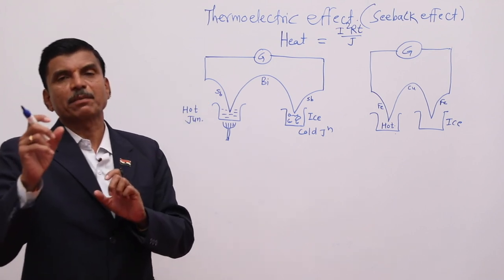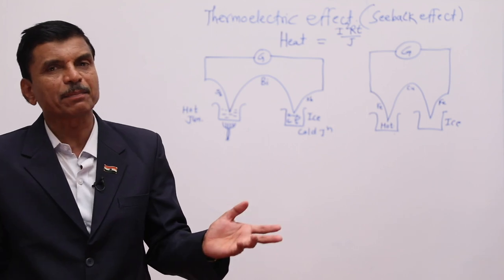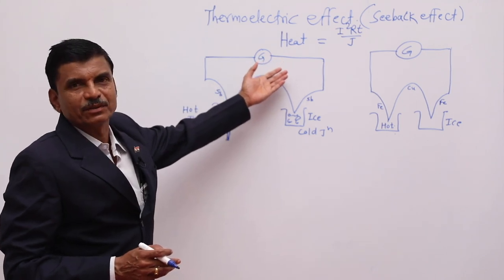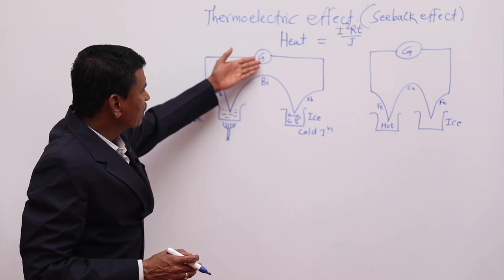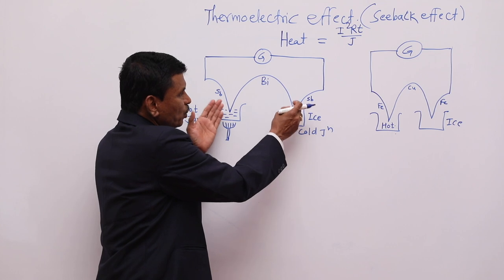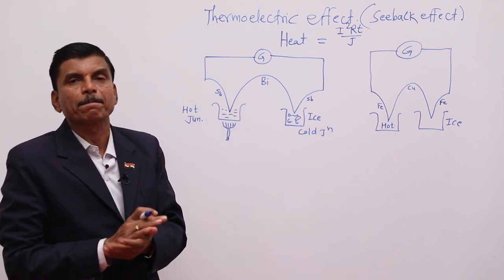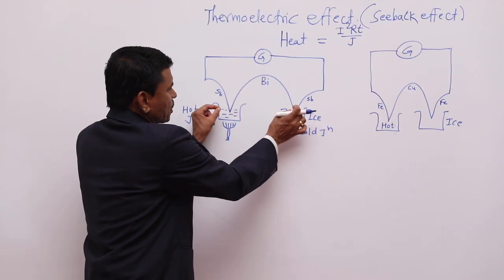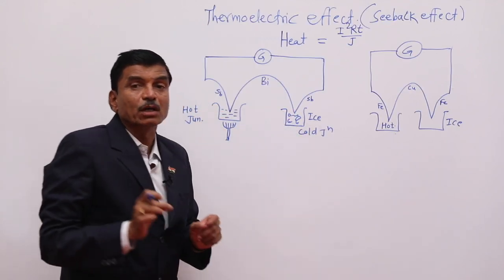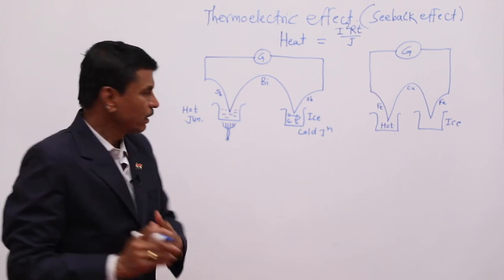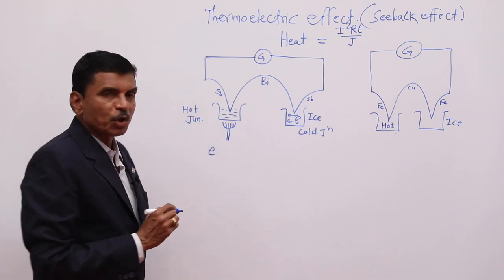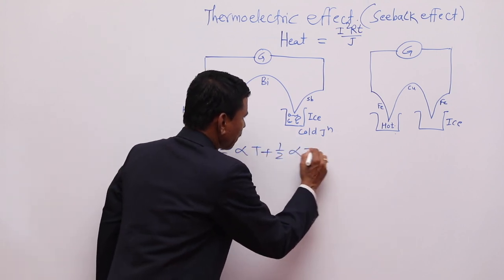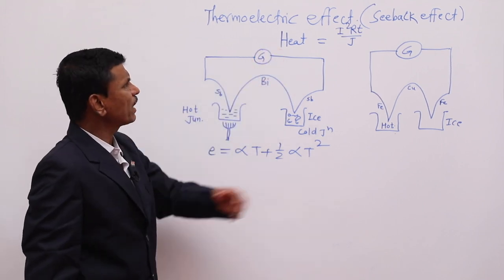Seebeck found that when two dissimilar metals have their two junctions kept at different temperatures, an EMF is induced. The production of this EMF when two junctions of two dissimilar metals are at different temperatures is called the thermoelectric effect, also called the Seebeck effect. These two metals together are called a thermocouple. The electromotive force (EMF) produced is given by the equation: E = αT + ½βT², as given by Seebeck.